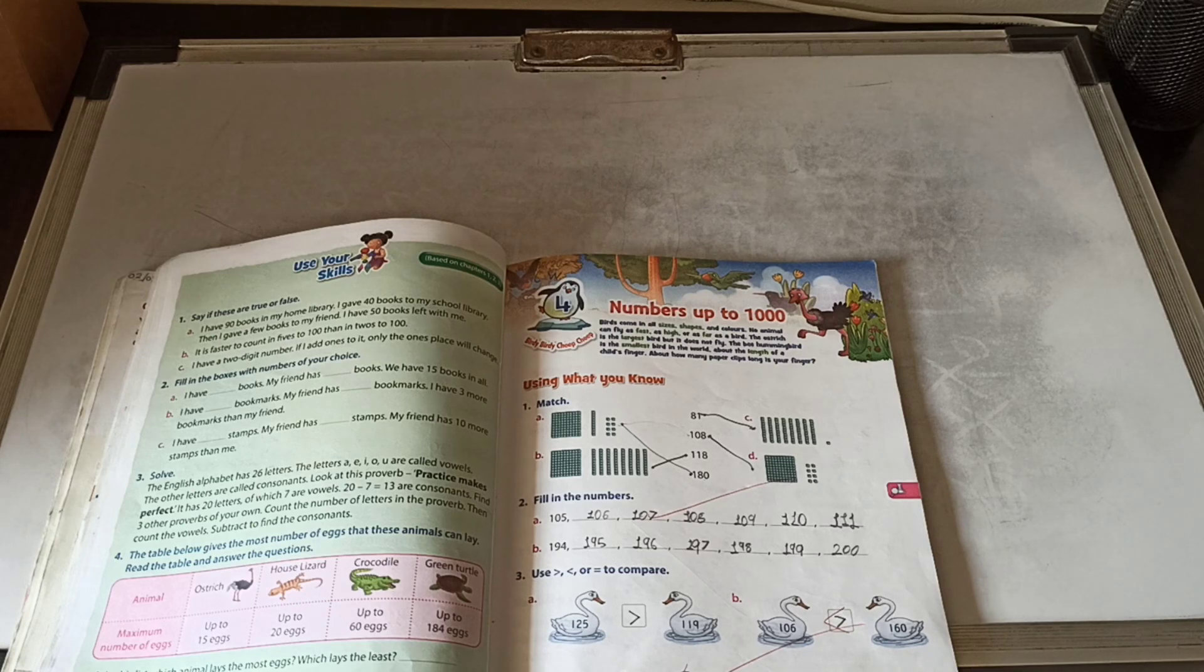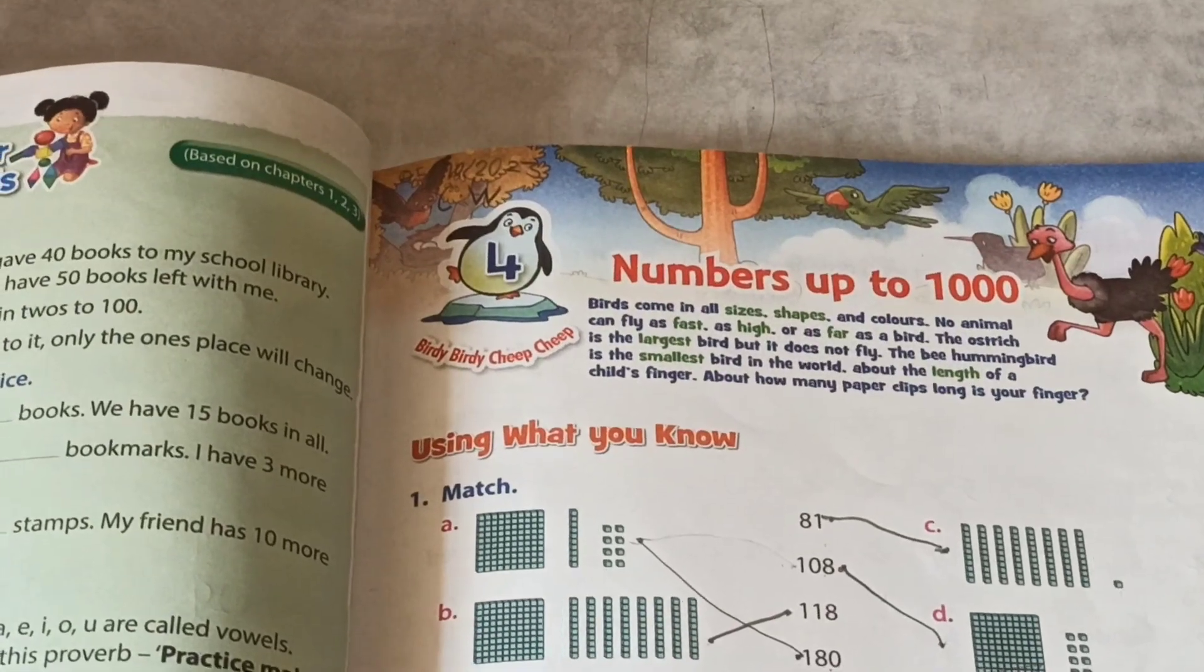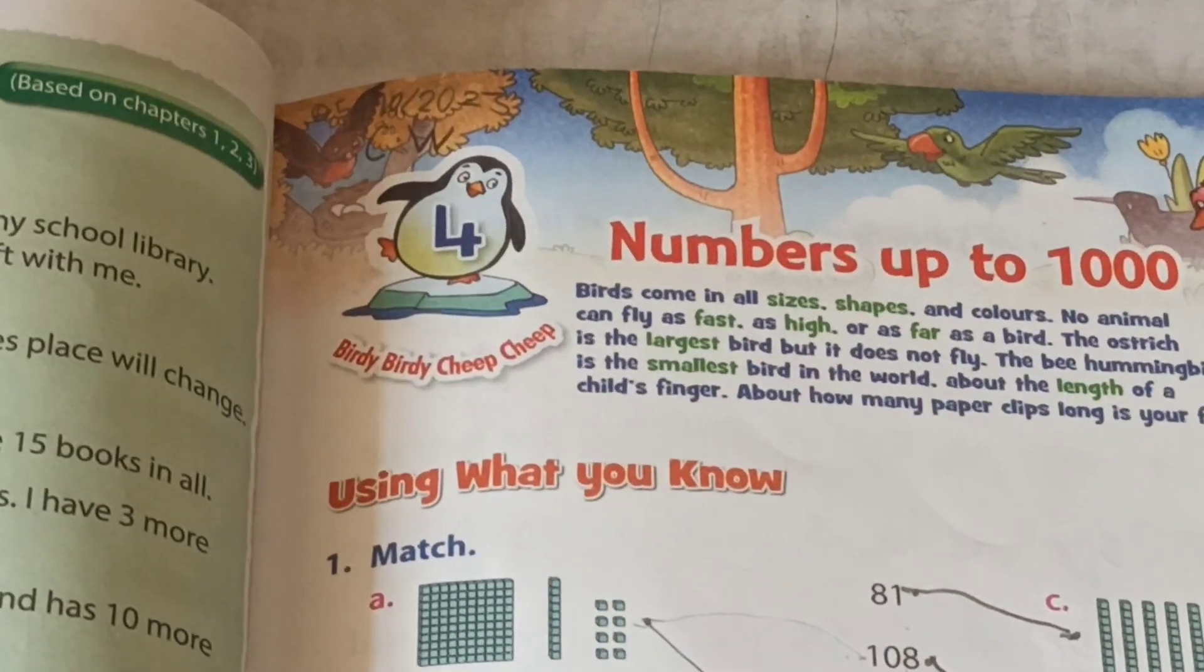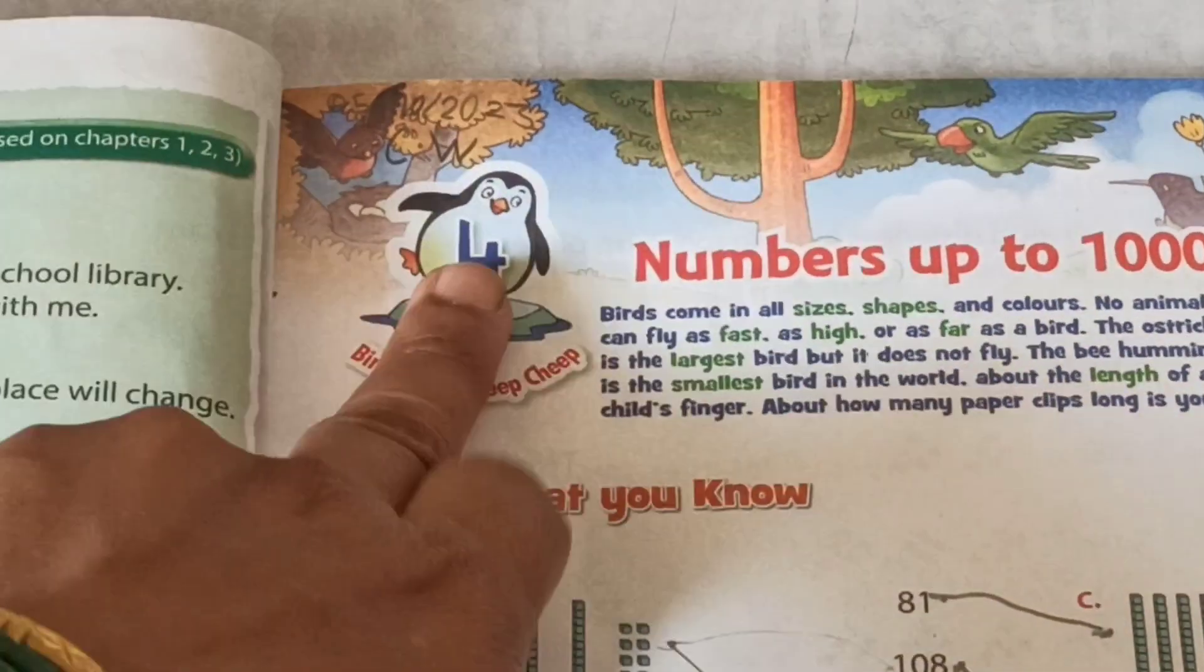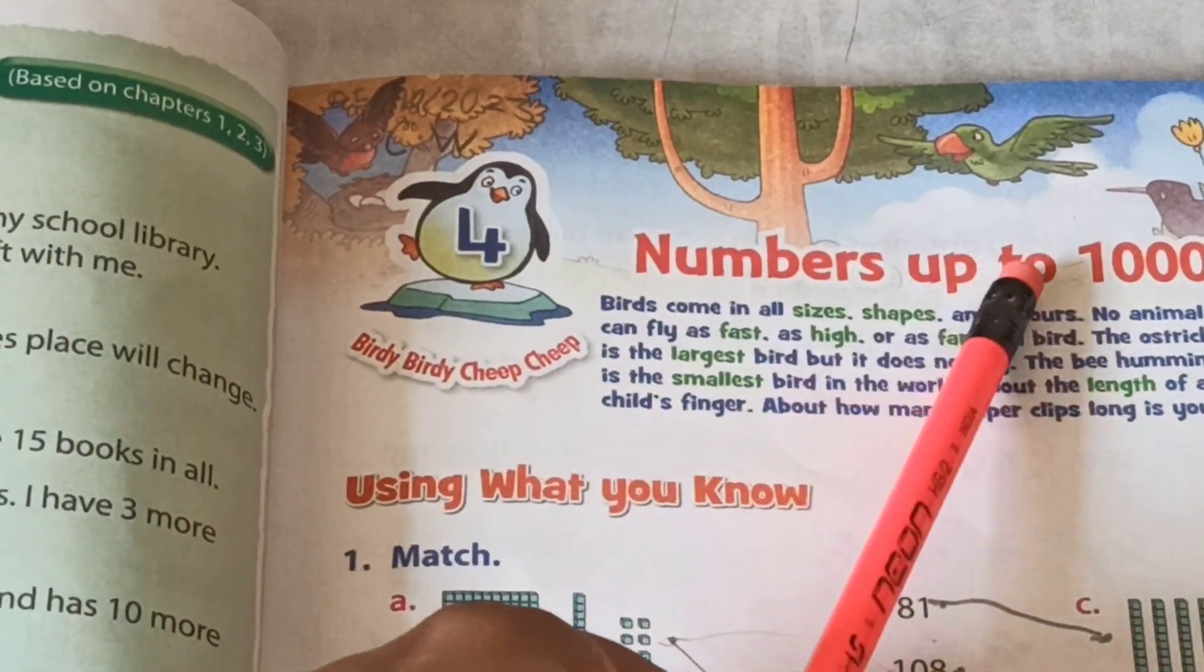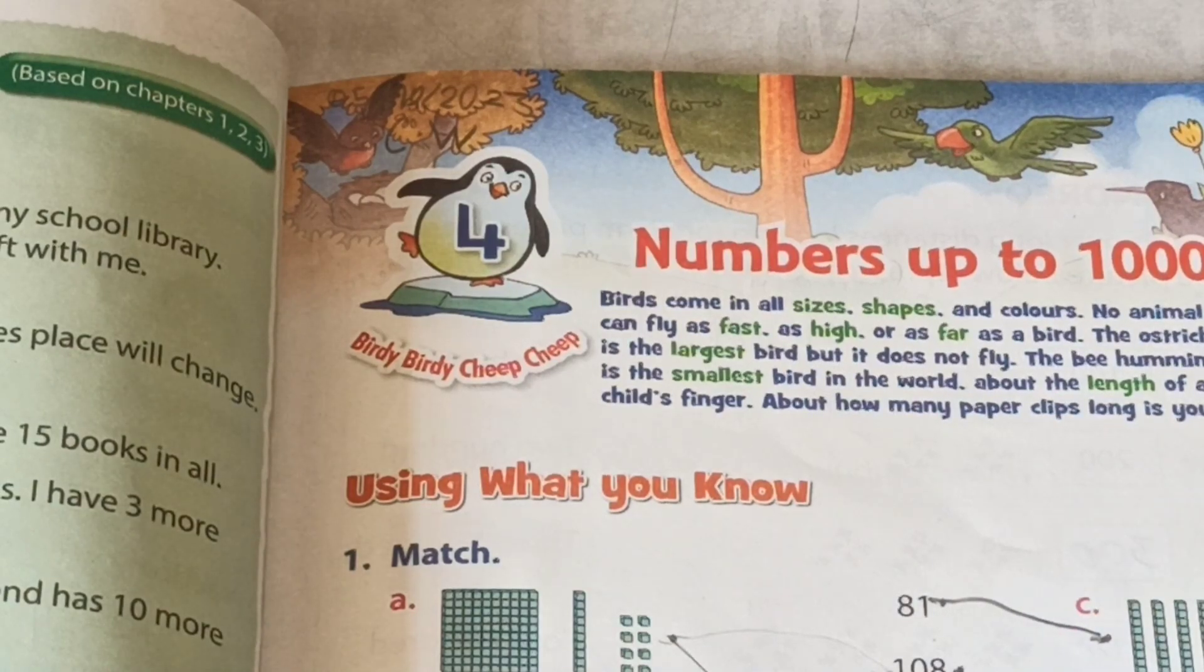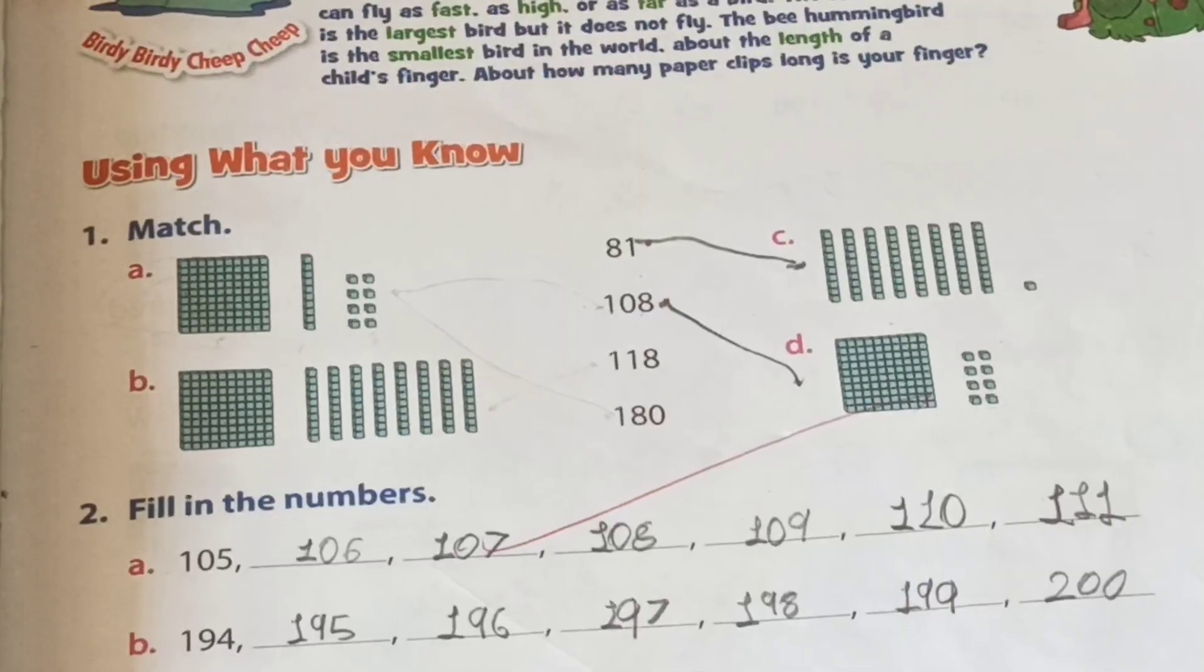About how many paper clips long is your finger? Yes, try. See. Kids, today is our topic: Using What You Know. See, you can see here our fourth chapter, Numbers up to 1000. Page number 63. Let's come.